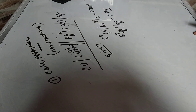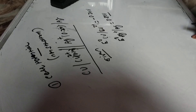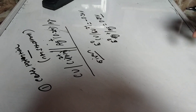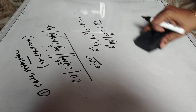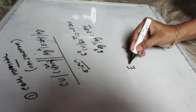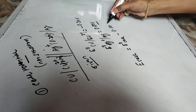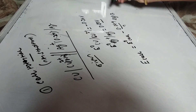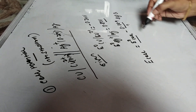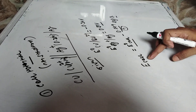Since temperature is not given, we consider it to be 25°C. So we apply the formula: E_cell = E°_cell − (0.059 / n) × log Q. To use this equation, we need to find E°_cell, n, and Q. First, we write the cell reaction to determine n and Q.